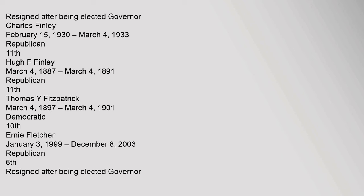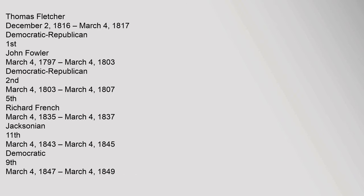Thomas Y. Fitzpatrick, March 4, 1897 to March 4, 1901, Democratic, 10th. Ernie Fletcher, January 3, 1999 to December 8, 2003, Republican, 6th, resigned after being elected Governor. Thomas Fletcher, December 2, 1816 to March 4, 1817, Democratic Republican, 1st. John Fowler, March 4, 1797 to March 4, 1803, Democratic Republican, 2nd; March 4, 1803 to March 4, 1807, 5th.